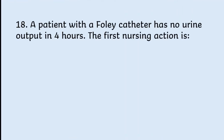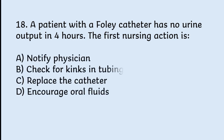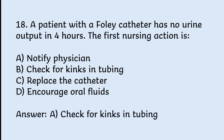A patient with a Foley catheter has no urine output in 4 hours. The first nursing action is: notify physician, check for kinks in tubing, replace the catheter, encourage oral fluids. Correct answer is check for kinks in tubing.